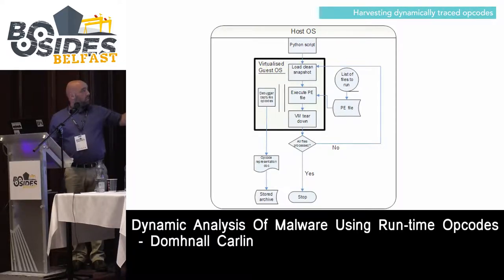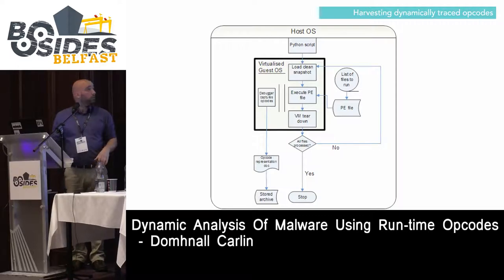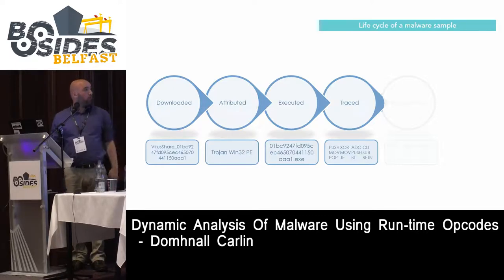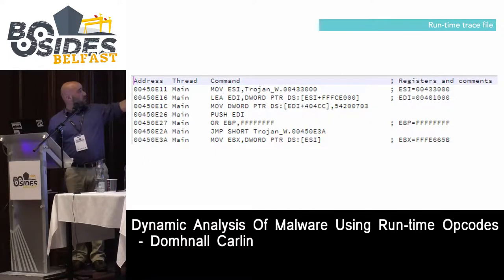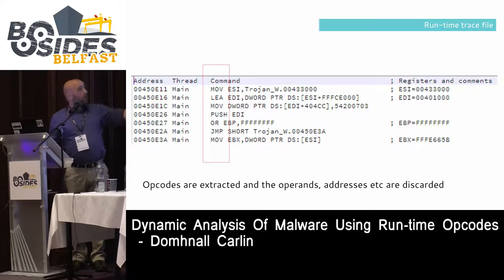Once we get the run trace, we tear down the VM and launch the next file. This was distributed over 14 computers in a dedicated malware lab and we just let it run. The debugger stores all the opcodes that come through. I parse those with a parser that counts all the instructions. A typical execution trace will be about nine million lines long. I discard the operands — it's the sequence and the quantity of opcodes that we look at.